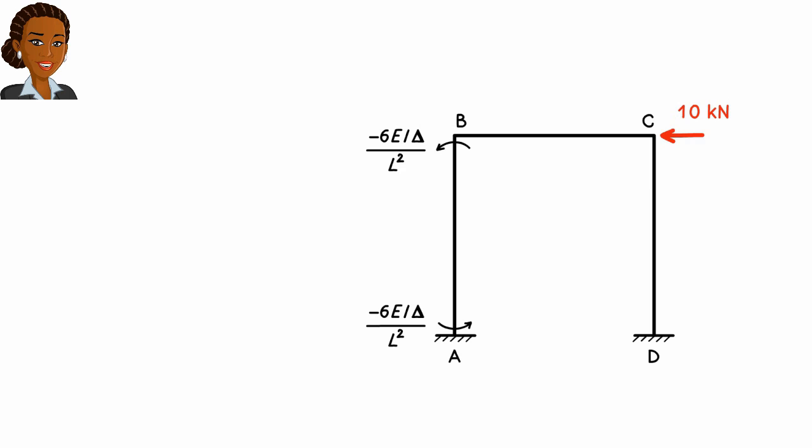What are we going to guess? We are going to guess a value for delta. This guess will allow us to compute the fixed end moments, which in turn lets us start the moment distribution process to analyze the frame.